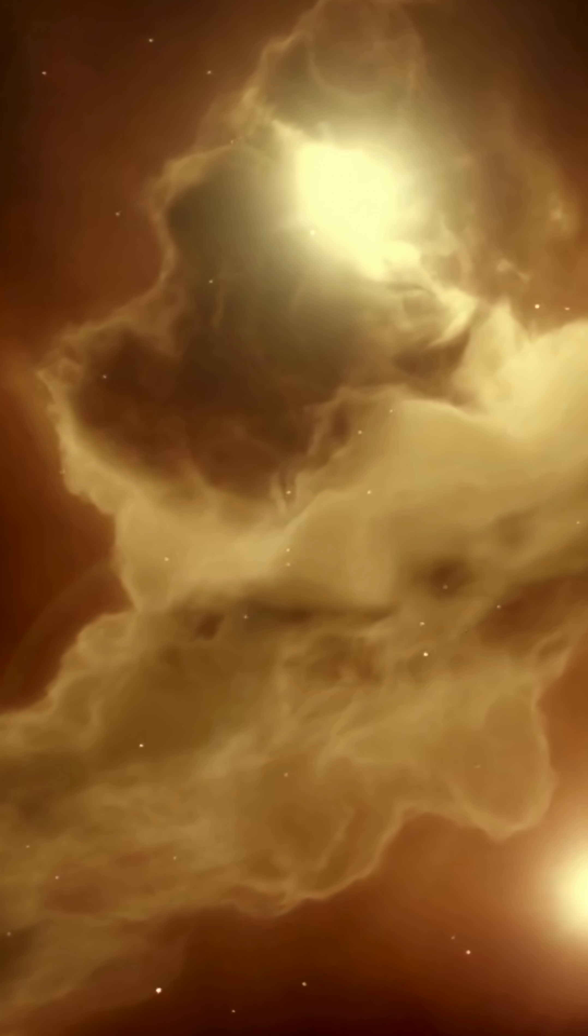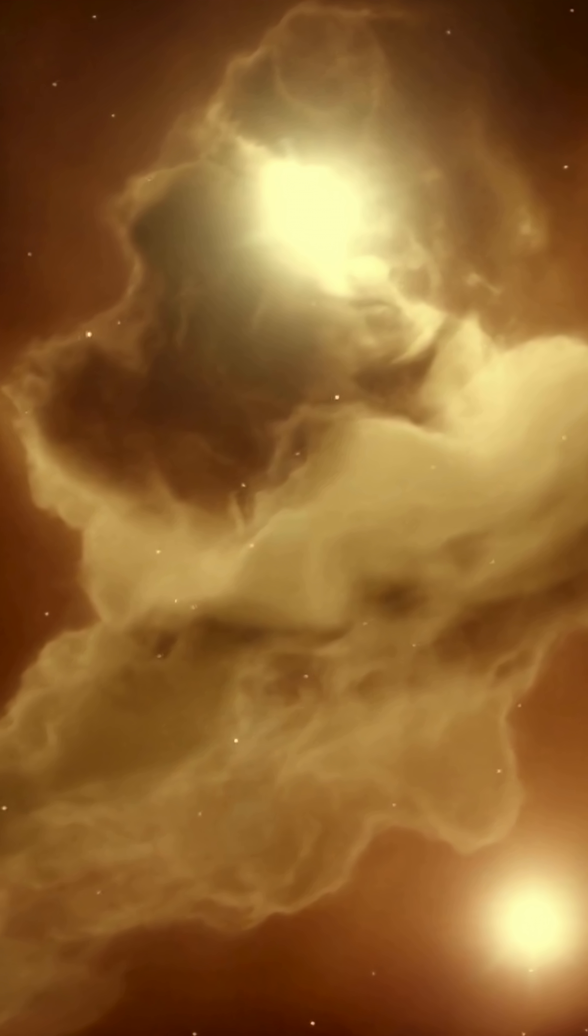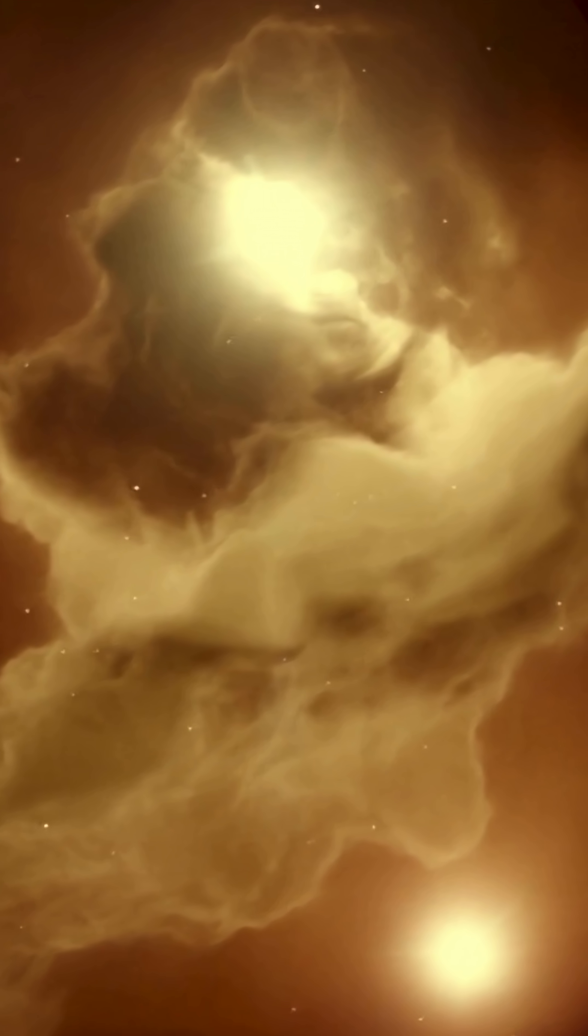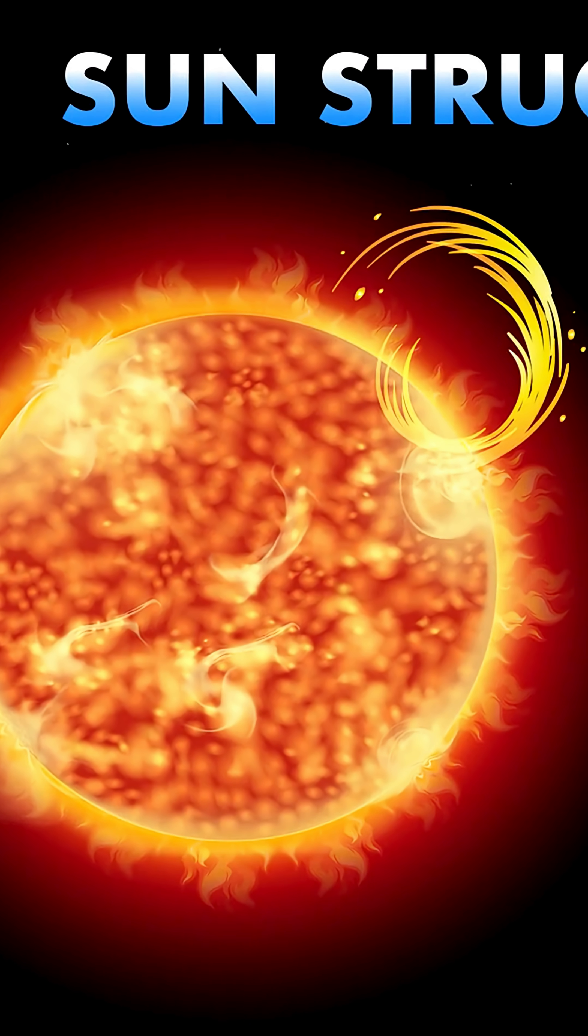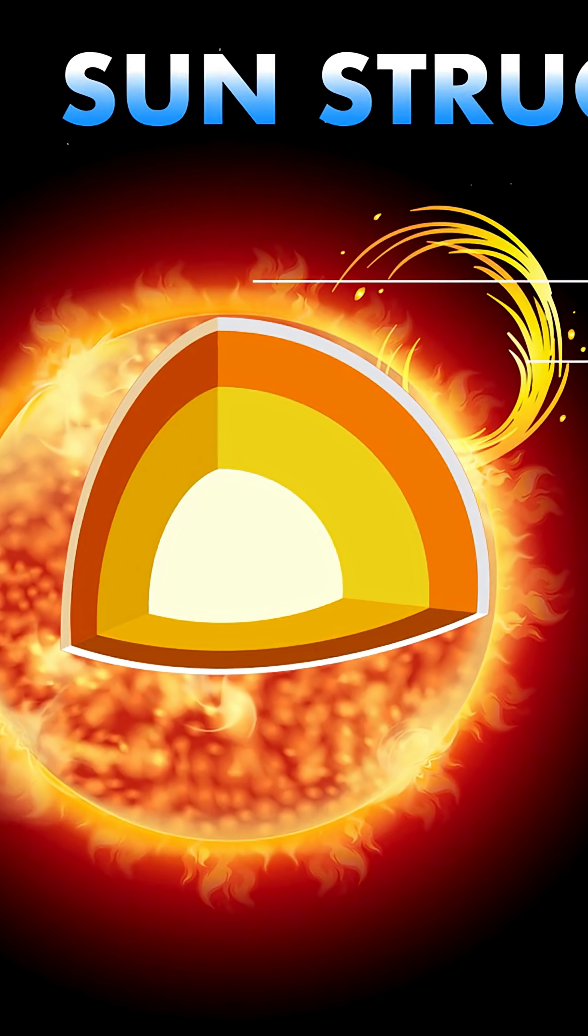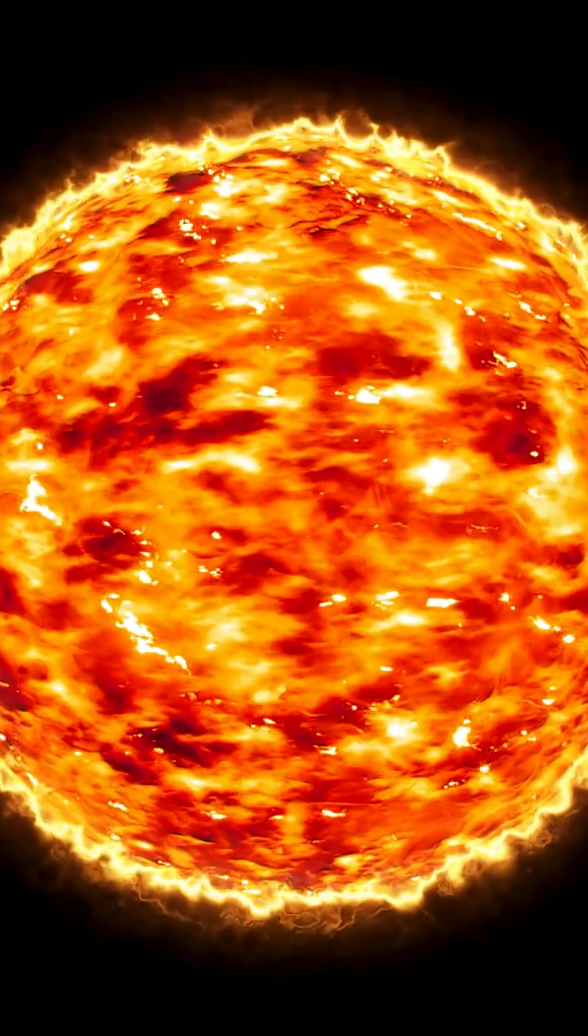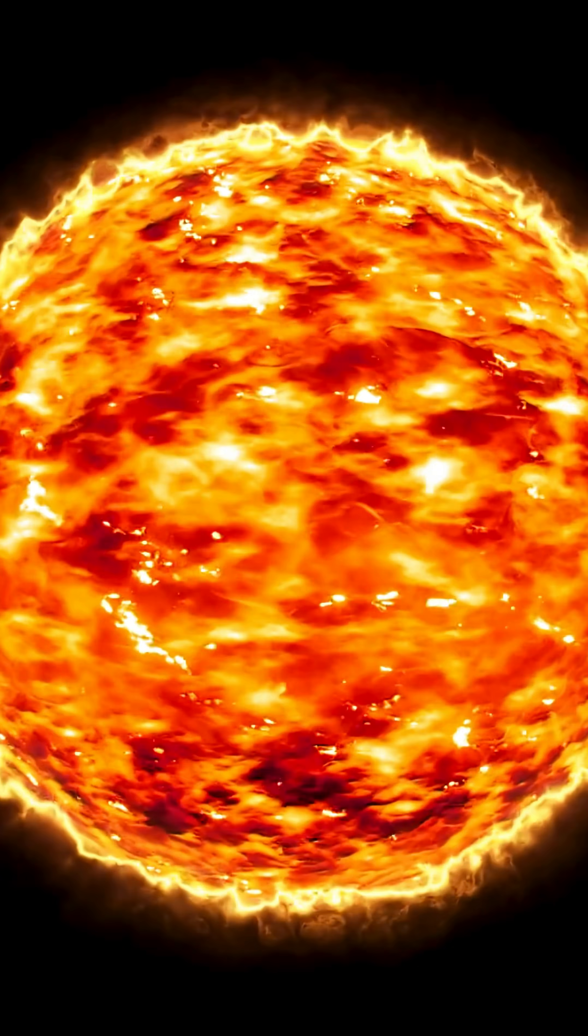It started 4.6 billion years ago, a giant cloud of gas and dust collapsing under gravity. And gravity doesn't share evenly. As mass piled into the center, the Sun got stronger, pulled harder, and grew faster until it swallowed nearly everything.